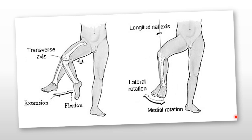The knee joint is a hinge joint allowing four main movements. Flexion, the backward movement of the knee, is produced by the hamstrings, gracilis, sartorius, and popliteus. Extension, the forward movement, is produced by the quadriceps femoris, which inserts at the tibial tuberosity. When the knee is flexed, lateral rotation is produced by biceps femoris, and medial rotation by semimembranosus, semitendinosus, gracilis, sartorius, and popliteus. Lateral and medial rotation can only occur when the knee is flexed; otherwise these rotations occur at the hip joint.